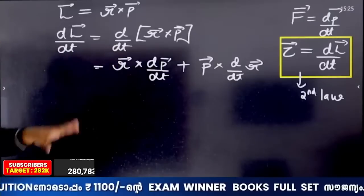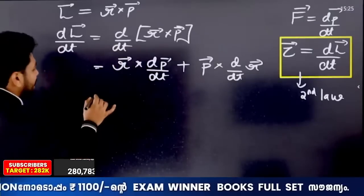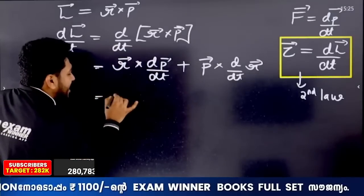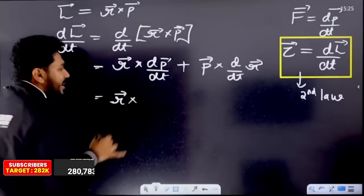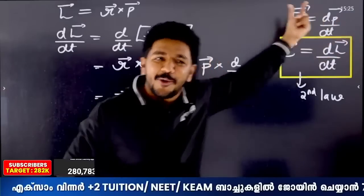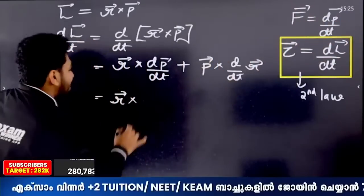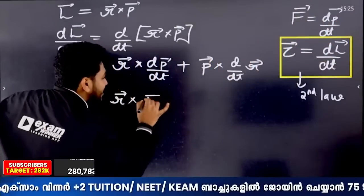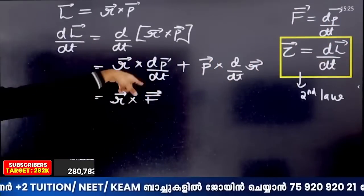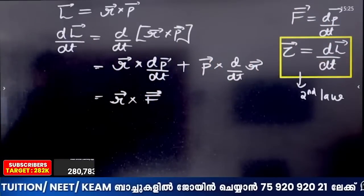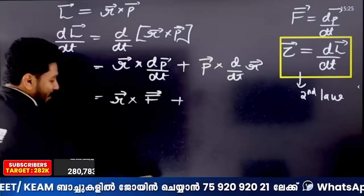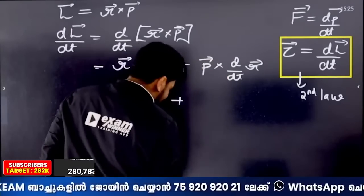What about R cross dp by dt? Since dp by dt is force, this becomes R cross F, which is torque. That is the first term. The second term is p cross dr by dt.